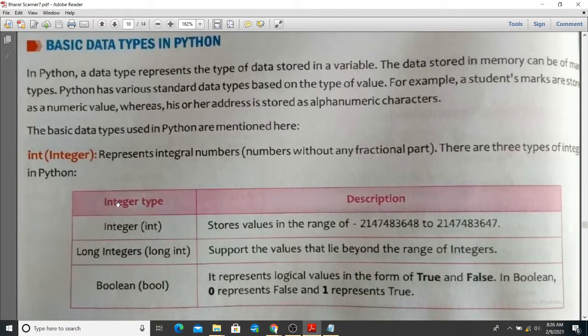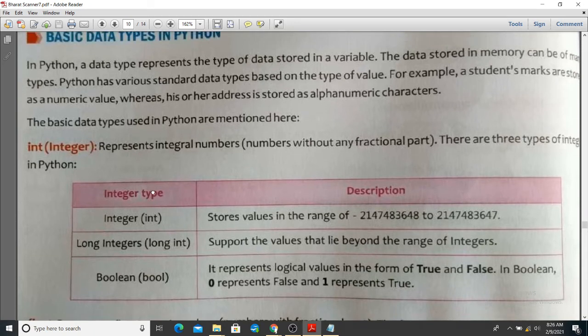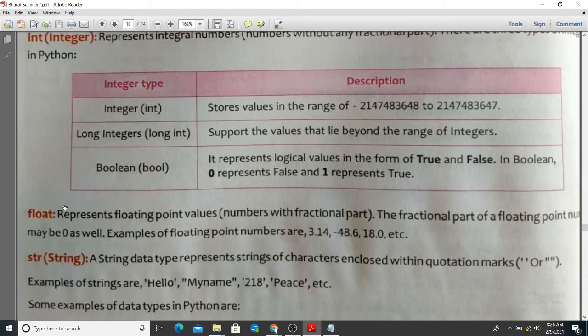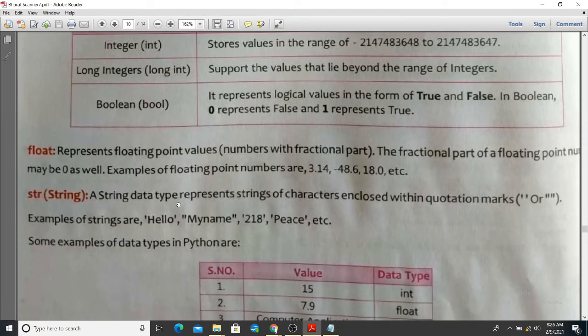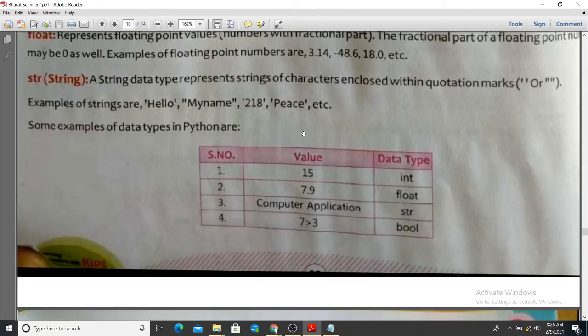So in Python there are three kinds of data types, but you have to understand only integers, float, and string. String data type represents a string of characters enclosed within a quotation mark, and examples of strings are these are a string data type.